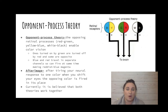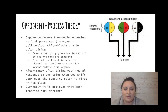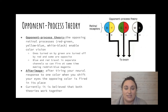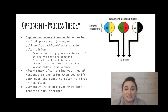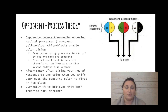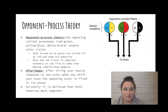The second theory is opponent process theory — the idea that we have opposing color pairs: red and green, yellow and blue, white and black. If something activates green, then red is shut off, and vice versa. Blue and red travel in separate channels so they can fire simultaneously, giving us reddish-blue magenta colors. But you cannot have blue and yellow, or green and red, firing at the same time.